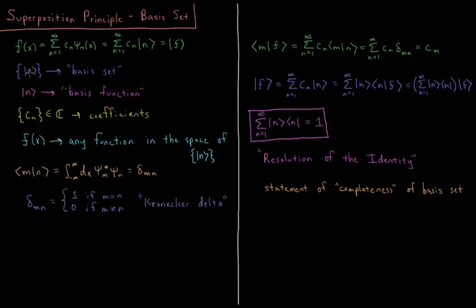The set of all of our wave functions can be called basis vectors, and together they form a basis set. Each individual psi_n is called a basis function. The coefficients, which are in general complex numbers — they don't necessarily need to be real — are the coefficients of our vector, which represents our function in this basis set.